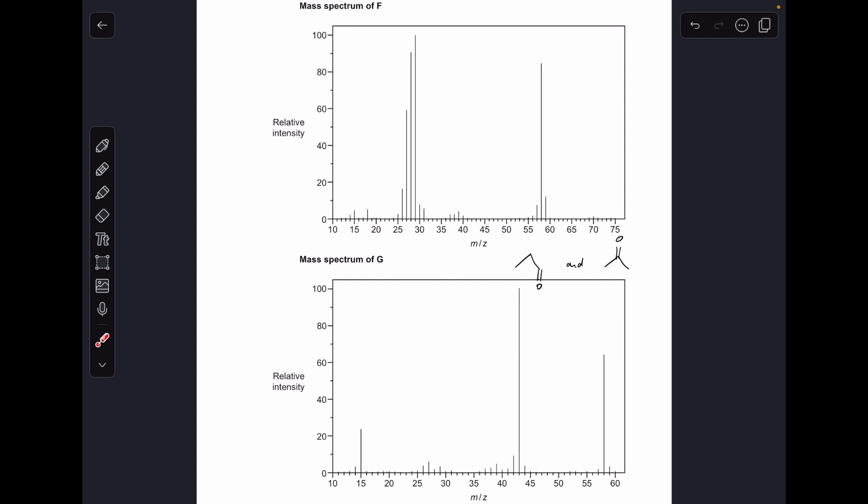So if this broke off here, the 29 could either be due to an ethyl fragment C2H5+ or it could actually be due to this fragment here, H2C=O.